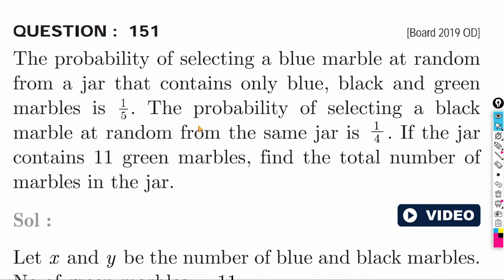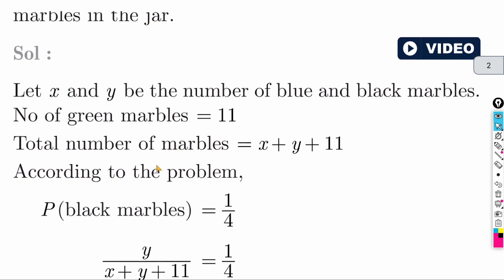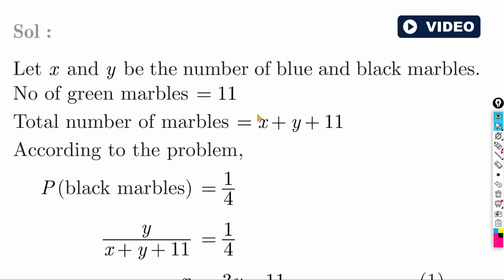Question: the probability of selecting a blue marble at random from a jar containing only blue, black, and green marbles is 1 by 5. The probability of selecting a black marble is 1 by 4. The jar contains 11 green marbles. Find the total number of marbles. Let x = blue marbles, y = black marbles, green = 11. Total = x + y + 11.